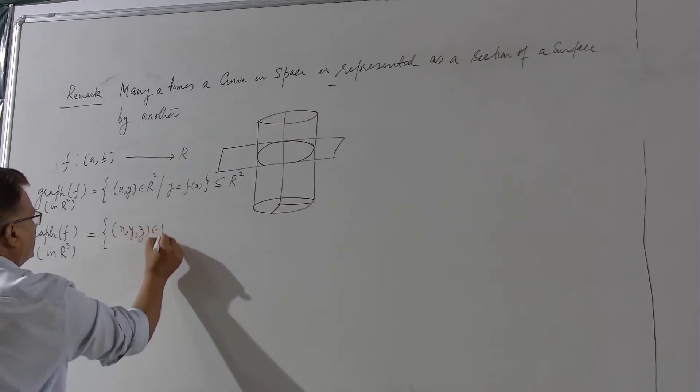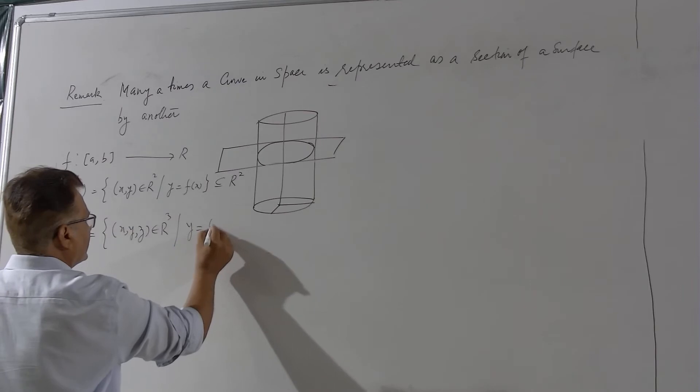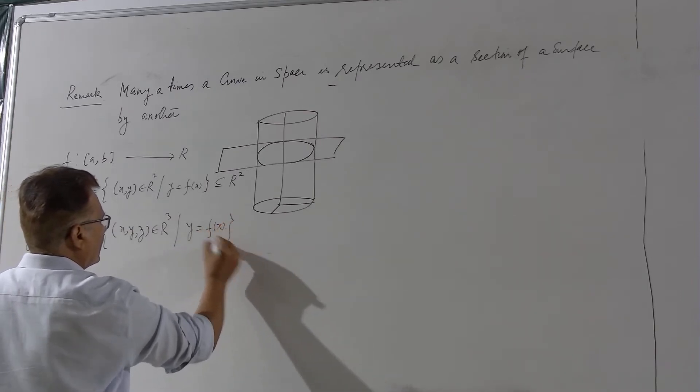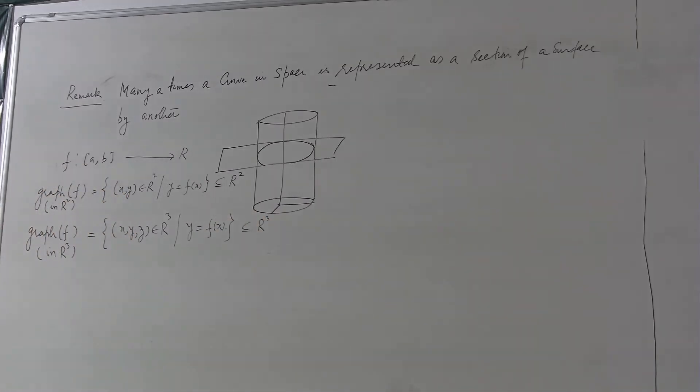z in R³ such that y equal to f(x). Now this you can see is a subset of R³. We have considered the same function but the only thing is that z is also there which is varying arbitrarily along z axis.